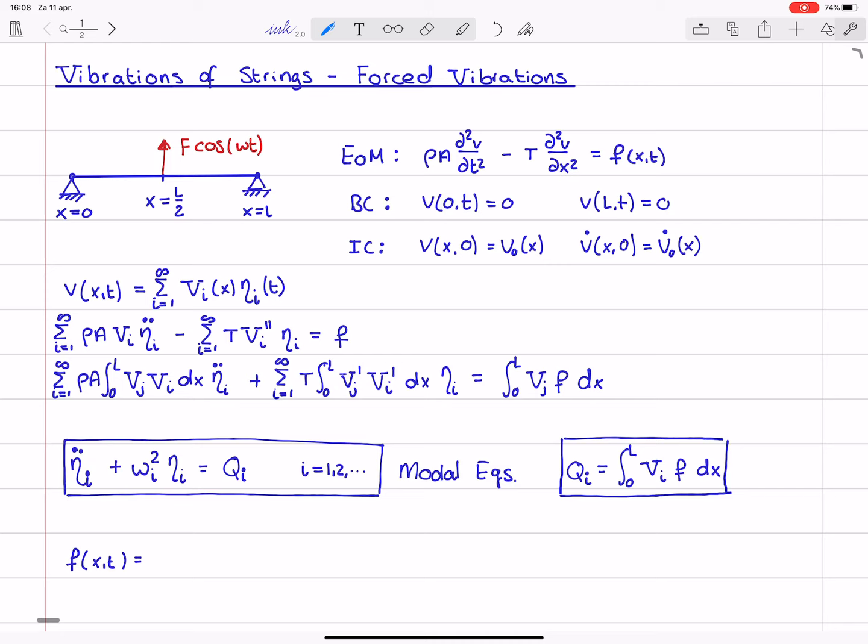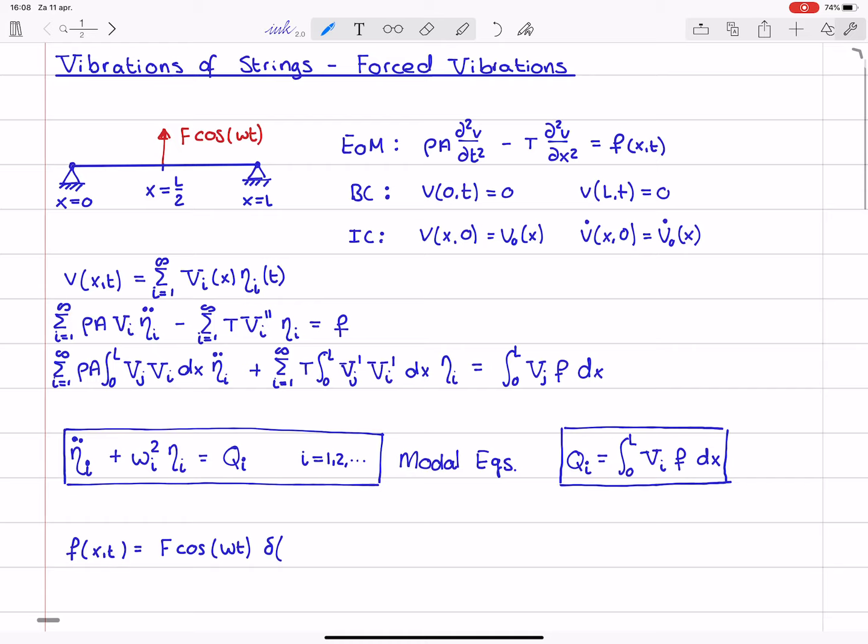this distributed load can be written as the point load, so that is f times the cosine of omega t, times the Dirac function, the Dirac delta function of x minus L over 2.